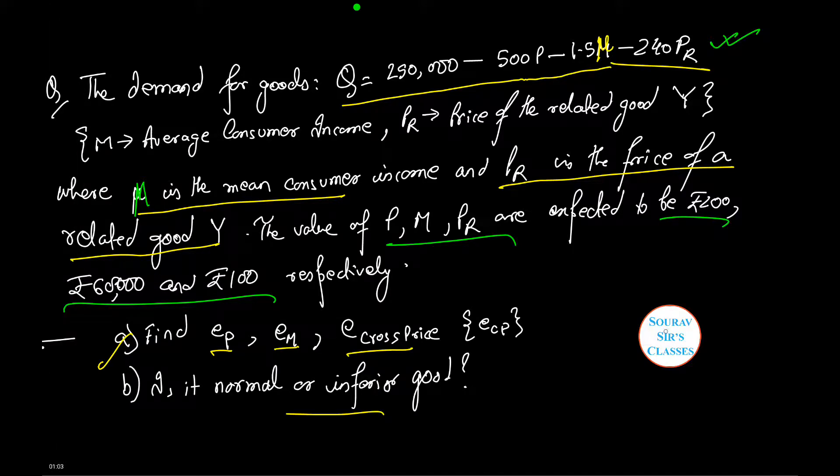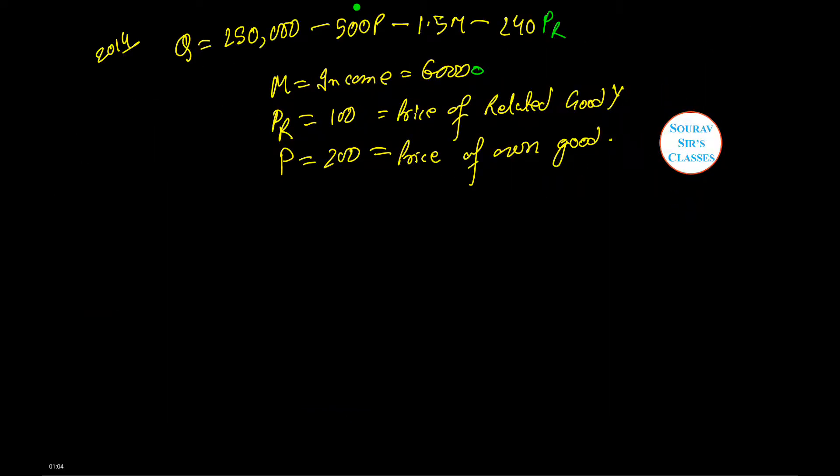Let us see how to do this. Now we are provided with the following observations or information in our question. Therefore, Q equals 25000 minus 500 into 200 minus 1.5, that is we are simply substituting the values in the original equation, minus 240 into 100, and upon calculation we have this as 36000.